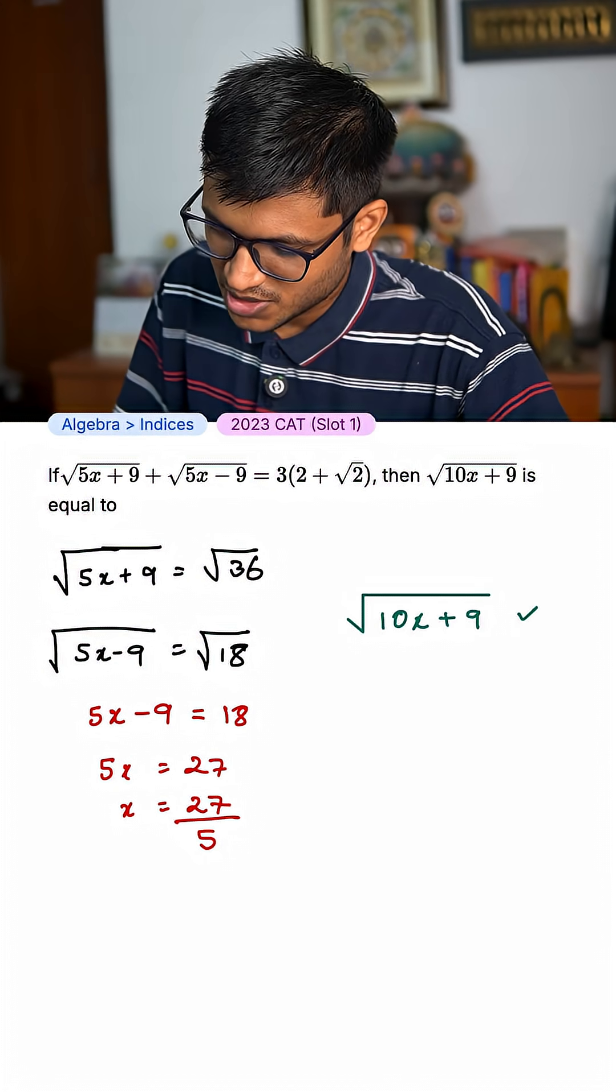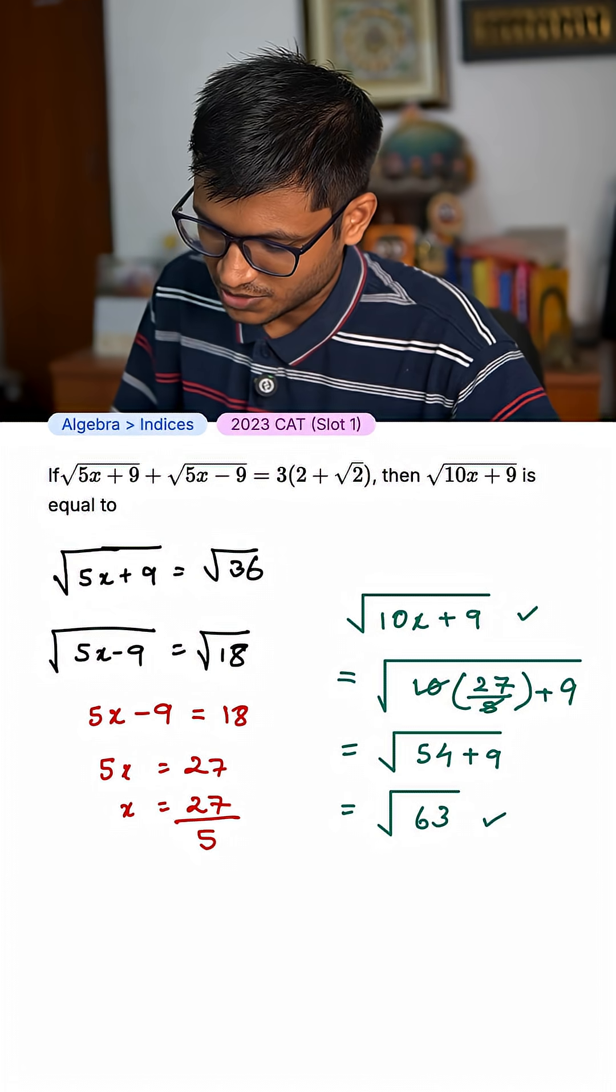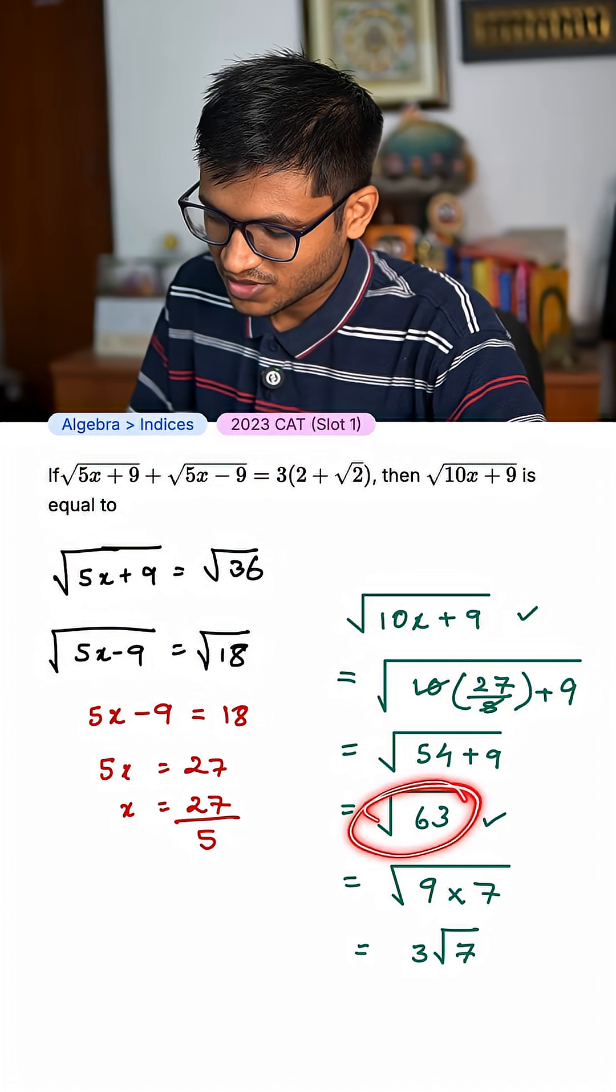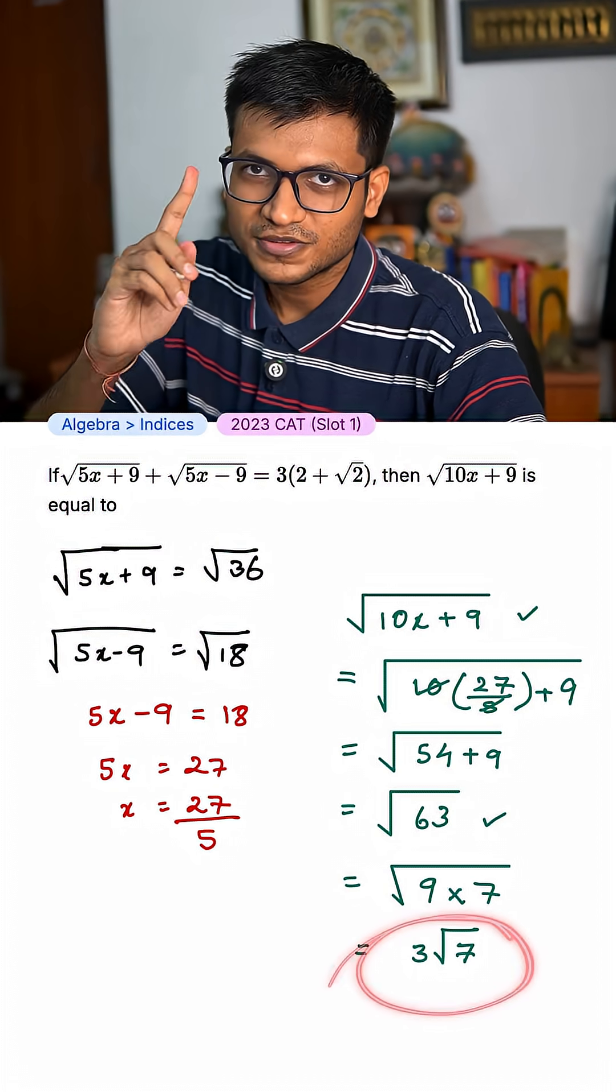If you need to find the value of this, just plug the value of x. We can cancel this out and we get √63. √63 can be written as √(9×7). √9 is 3. So your final answer is 3√7.